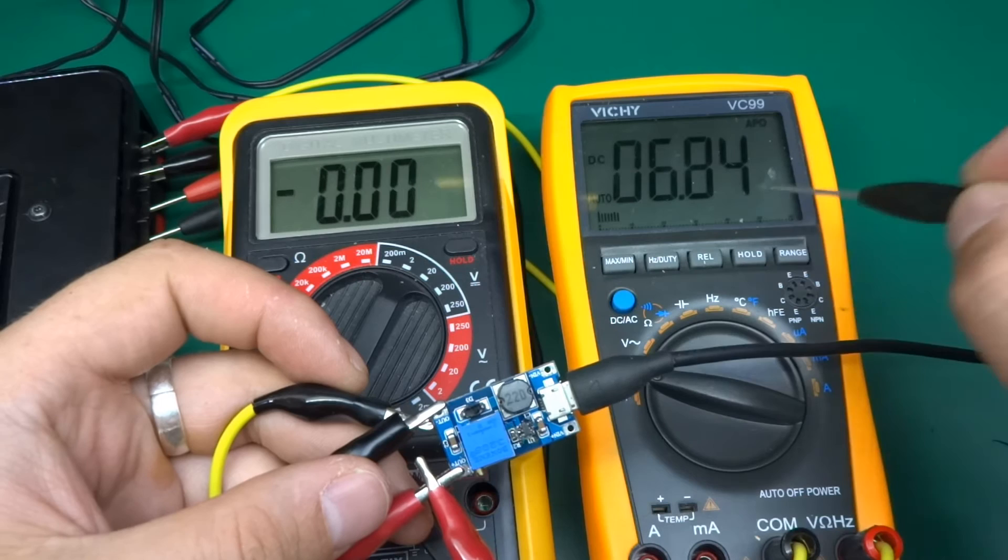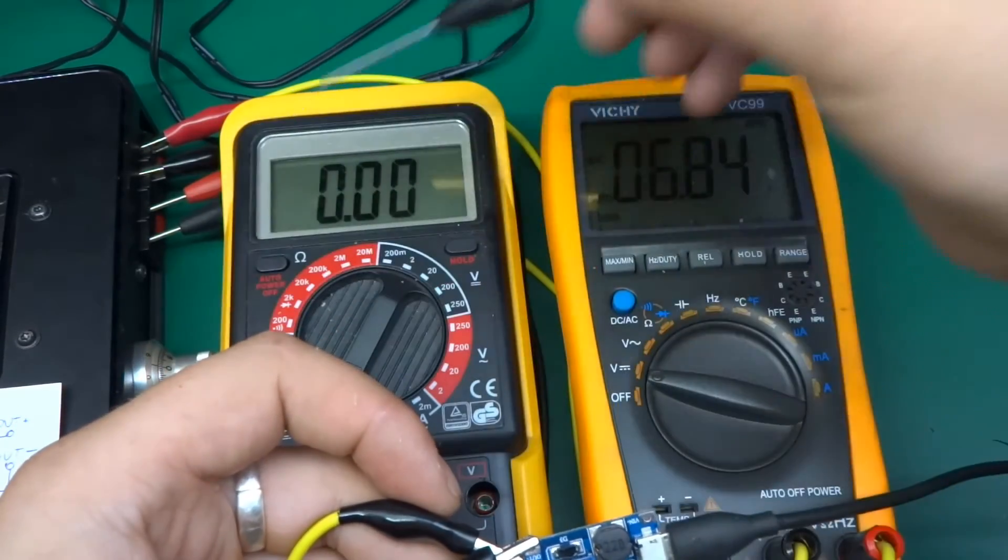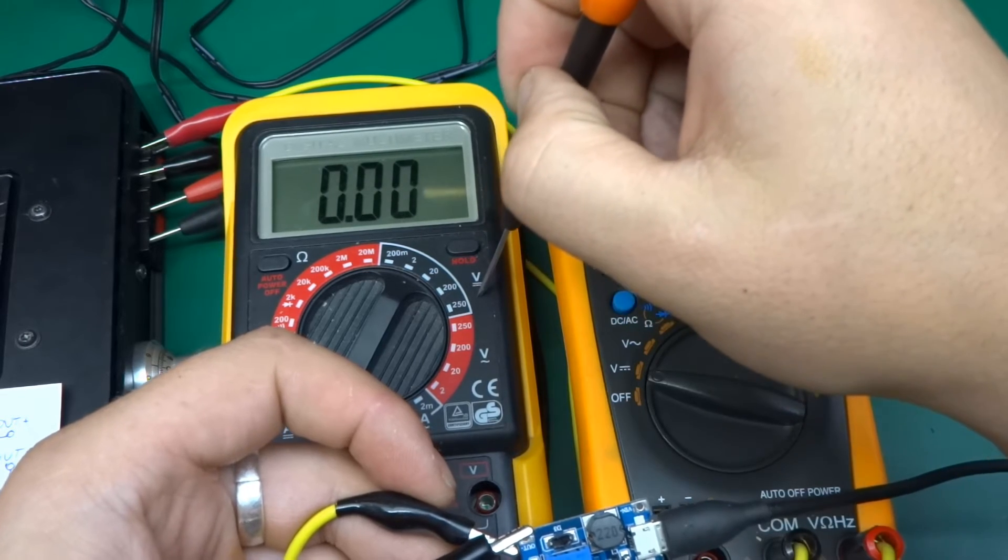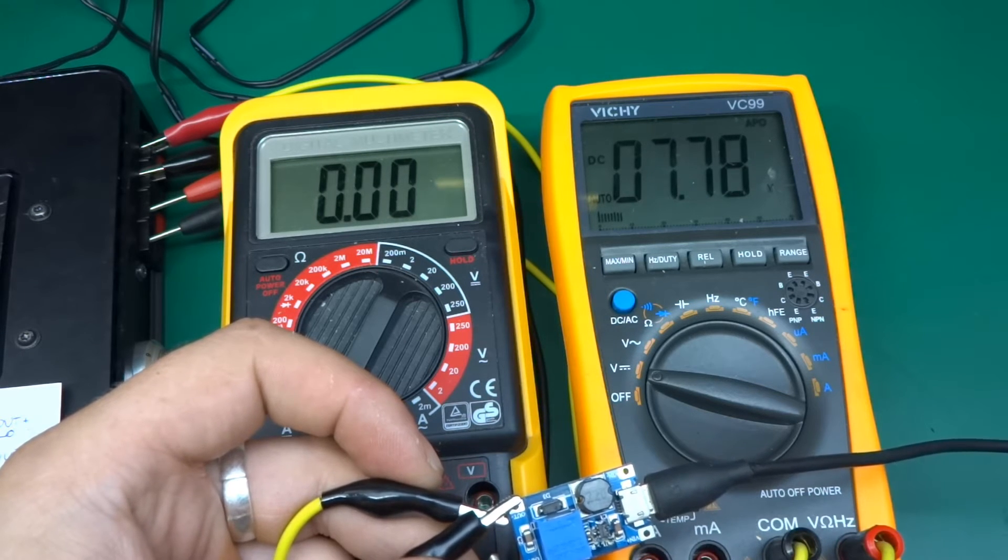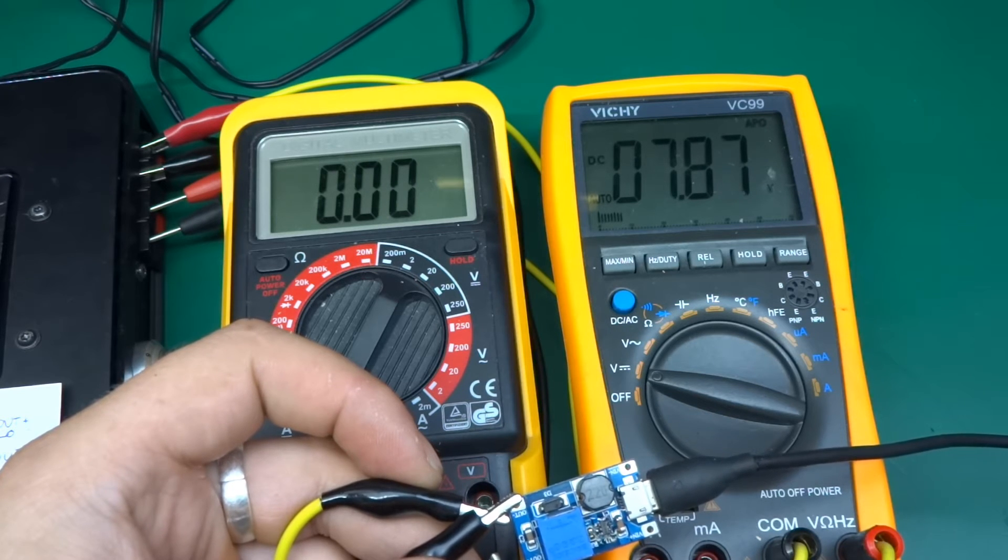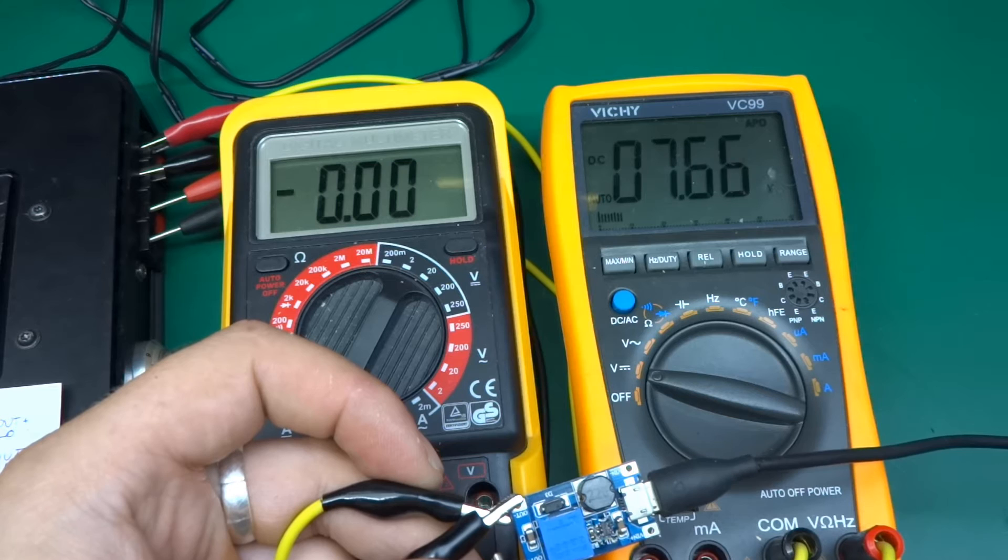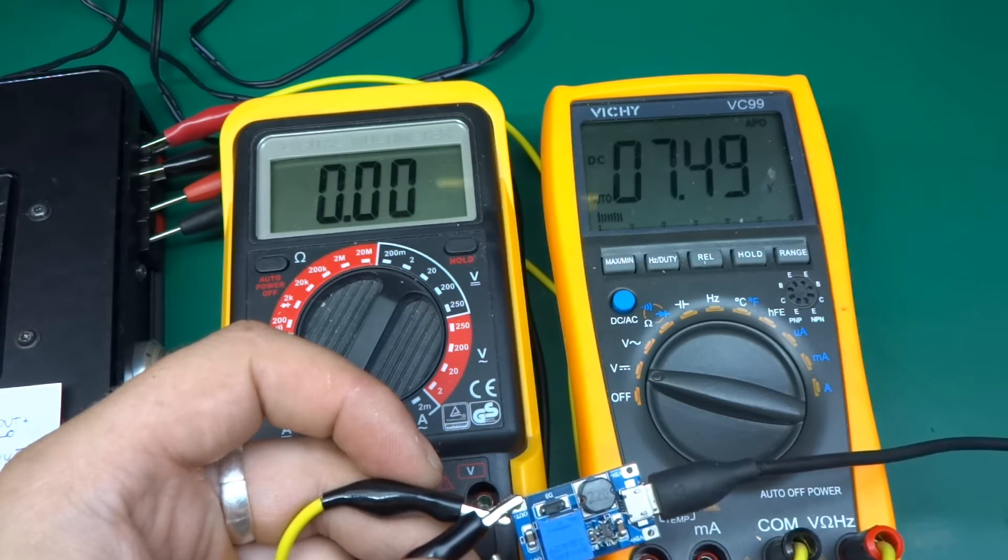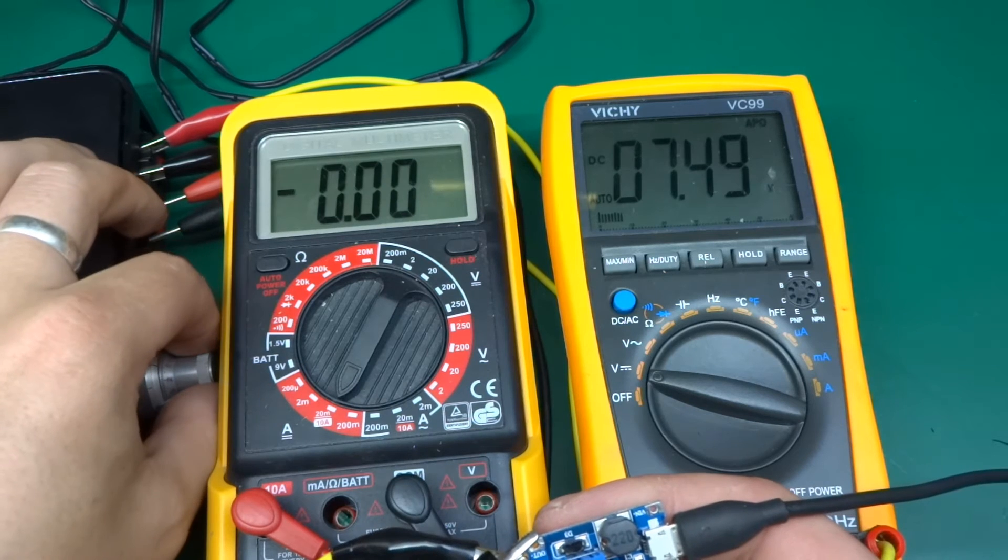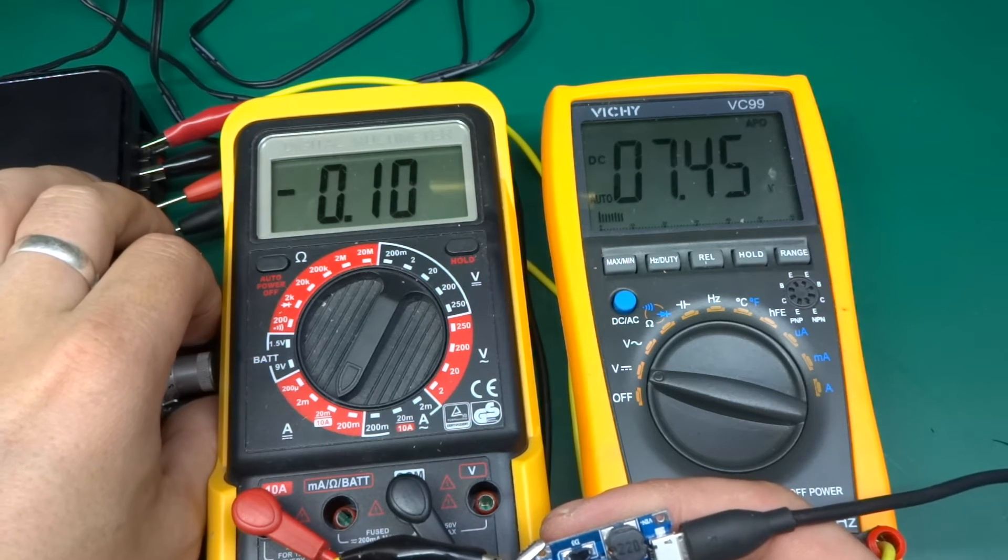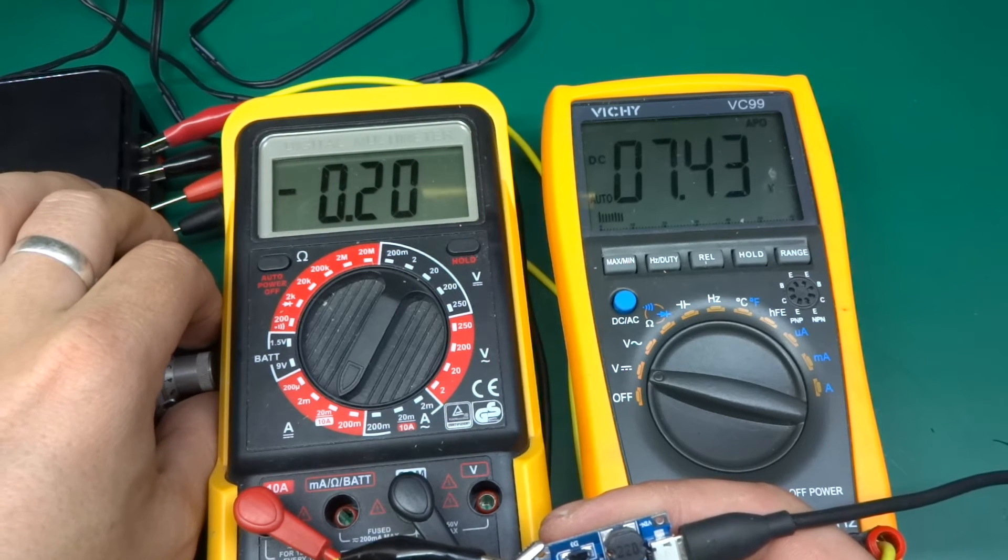This is the test setup. On this meter you'll see the voltage on the output, and this is connected to the constant current load. This meter here is measuring the current going out. Let's set it up to, say, seven and a half volts. It's getting five volts on the input, maybe like 5.1.